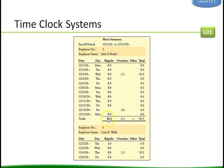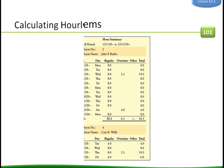Looking at the time clock summary: we have 88 regular hours and six and a half overtime hours, giving a total amount of hours in the pay period. This pay period covers the first through the fifteenth.